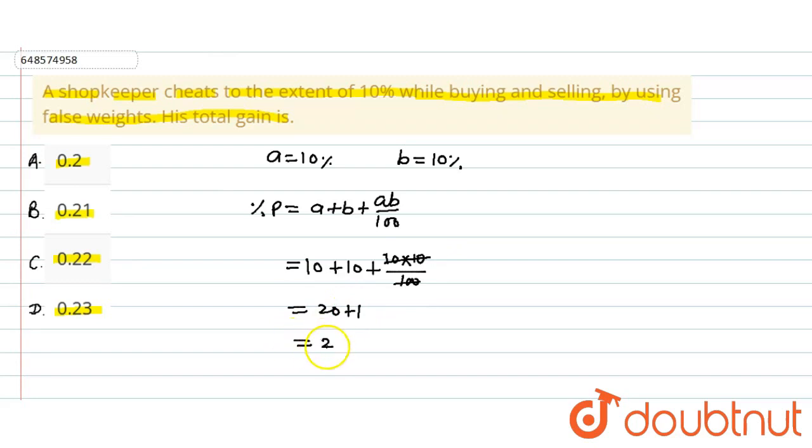The net profit we get is 21%. This is equivalent to 0.21, so option B is the right answer. Thank you.